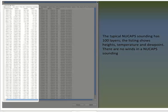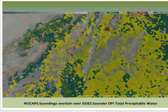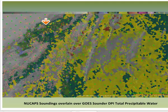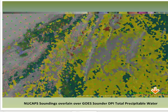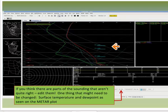Pressure, height, temperature, and dew point are shown — there are no winds. This is the point in clear air over North Carolina. NuCAPS data are plotted on top of GOES sounder DPI total precipitable water. Surface METARs are also plotted to give you an idea of what the temperature and dew point at the surface in the sounding should be. Here's the sounding again from the clear air with the well-mixed boundary layer.